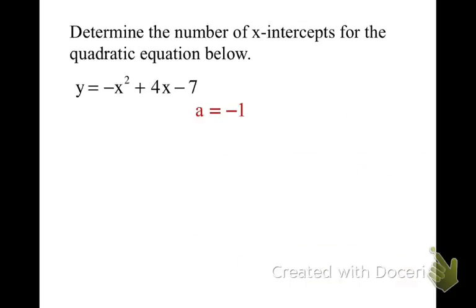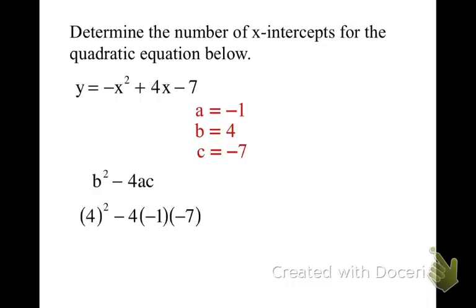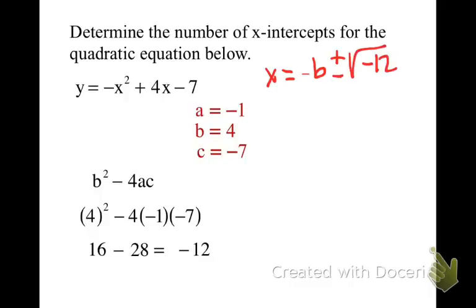Next one: my a is negative 1, my b is negative 2, my c is negative 3. Pause the recording and figure out how many roots or x-intercepts there are. Check your work: b squared minus 4ac — 4 squared minus 4 times negative 1 times negative 7 equals 16 minus 28, which gives negative 12. You cannot take the square root of a negative number, and because the discriminant is less than zero, there are no real roots — no real solutions.